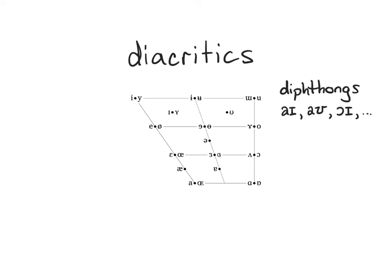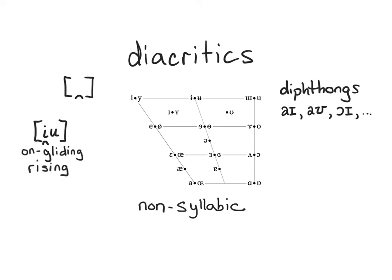Finally, when representing diphthongs, it is often useful to know which part of the diphthong is the most prominent — the loudest — what we call syllabic. By default, vowels are assumed to be syllabic, so the IPA provides a diacritic, an inverted breve that goes under the base symbol, to represent a non-syllabic vowel. For example, in a diphthong made up of a sequence of E and U, we could get two different results depending on which part is syllabic and which part is non-syllabic. If the E portion is non-syllabic, we get an on-gliding or rising diphthong. If instead the U portion is non-syllabic, we get an off-gliding or falling diphthong.